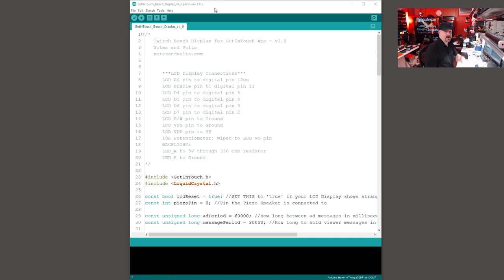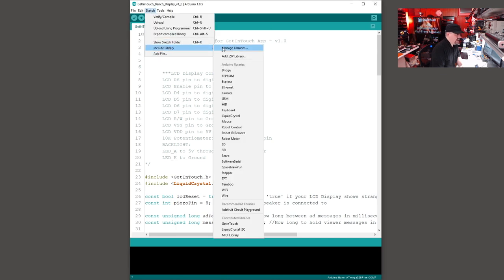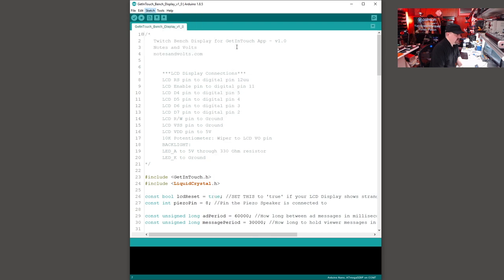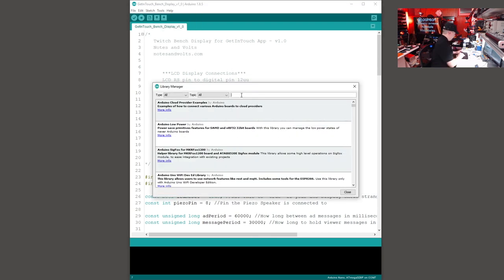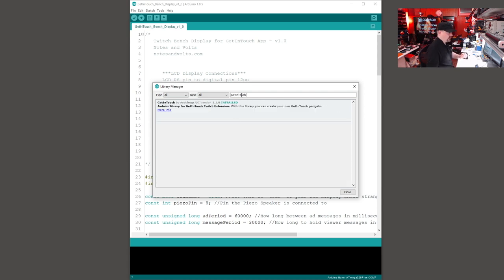Finally, to use the Arduino with our system, we're going to add the Get In Touch library to the Arduino software. Go to Sketch, Include Library, Manage Libraries. Once again, do a search for Get In Touch. And here's the library. Just select the latest version and click Install. And you are done.